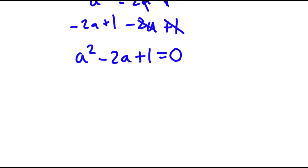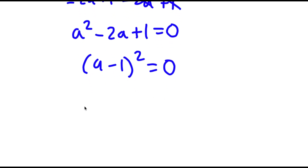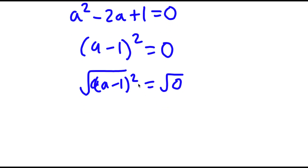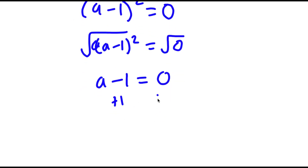Now, a squared minus 2a plus 1 is the same thing as a minus 1 squared, so this is equal to 0. And now if I take the square root on both sides, the square root of a minus 1 squared is simply a minus 1, and the square root of 0 is 0. So I have a minus 1 is equal to 0. And if I add 1 on both sides, I get a is equal to 1.